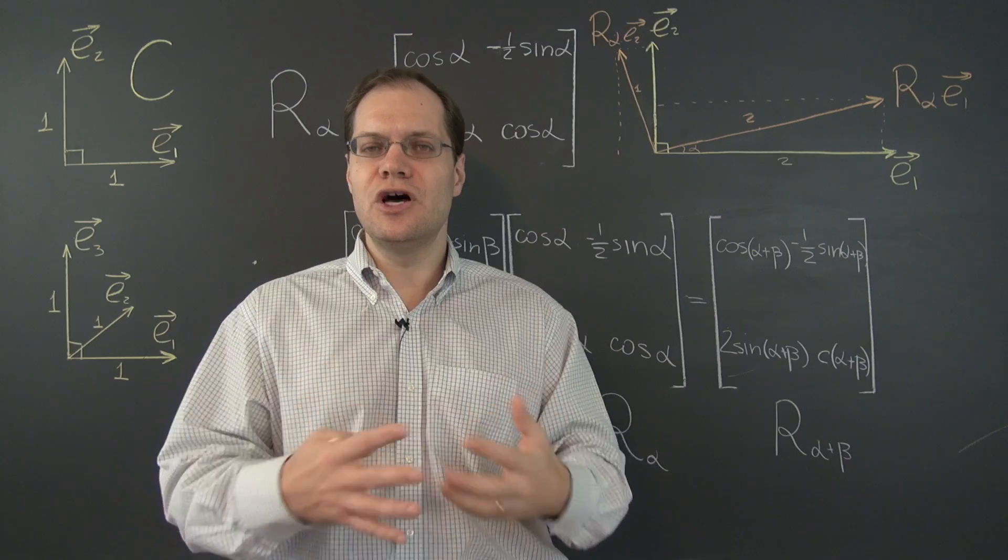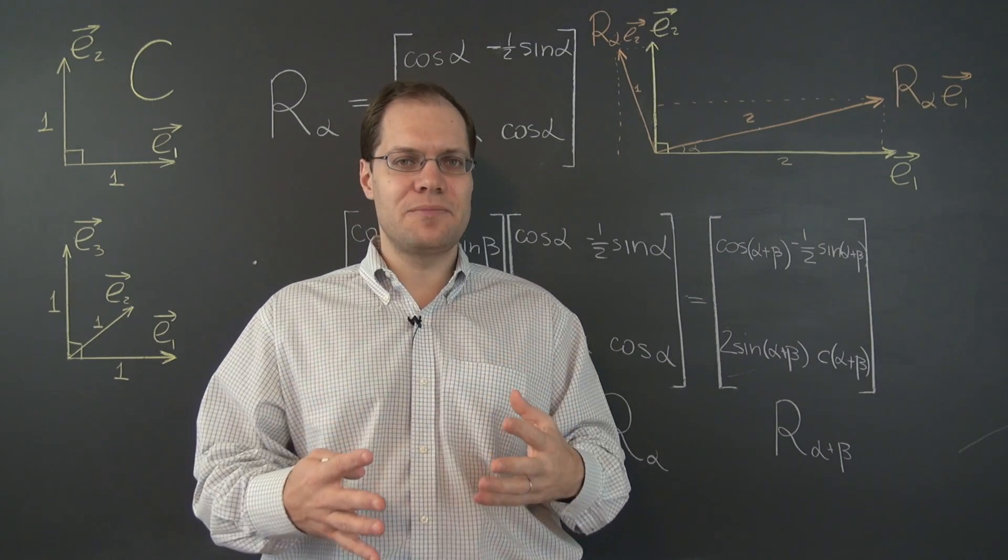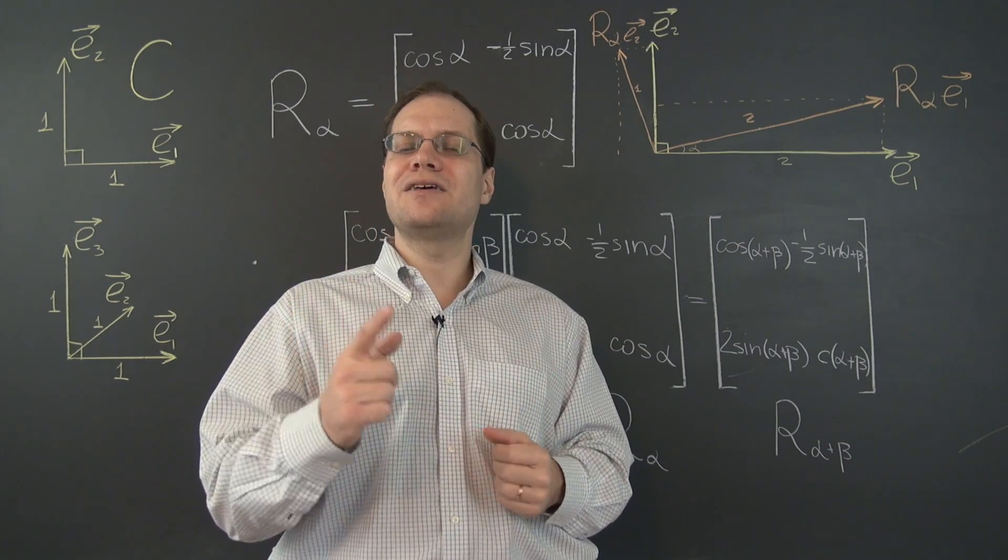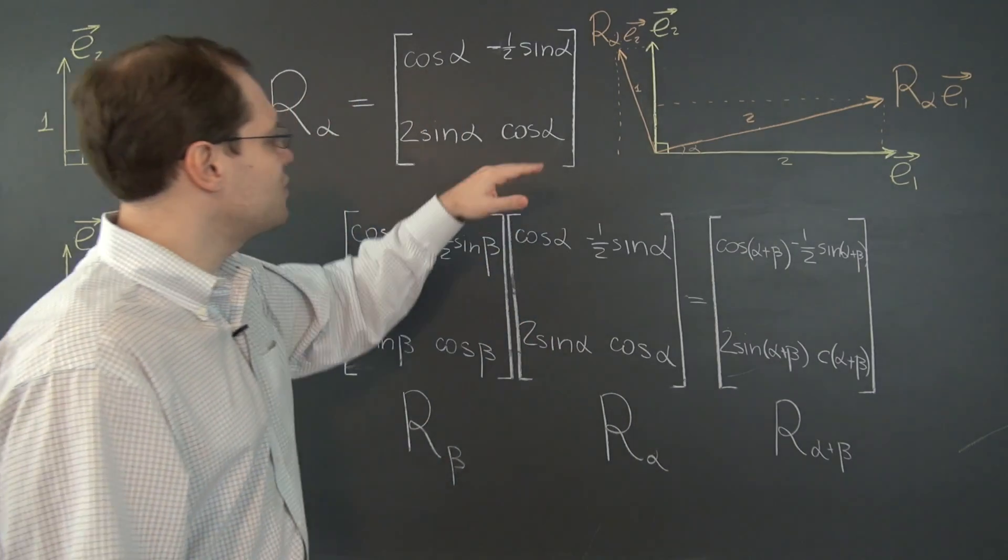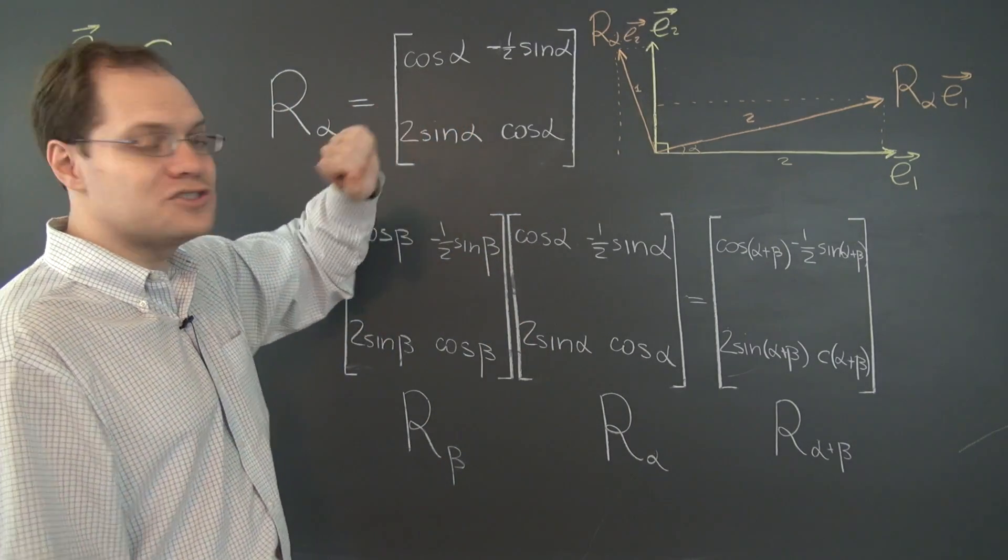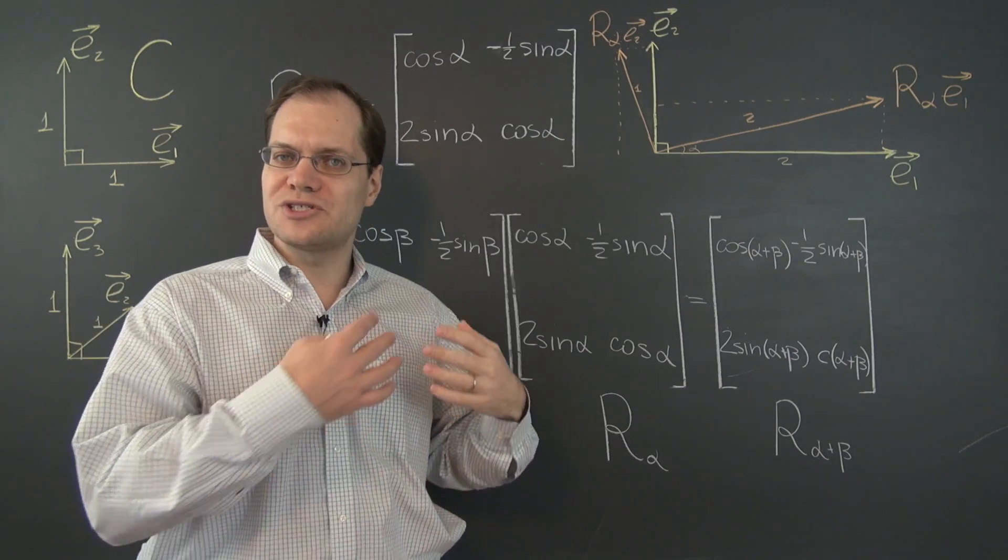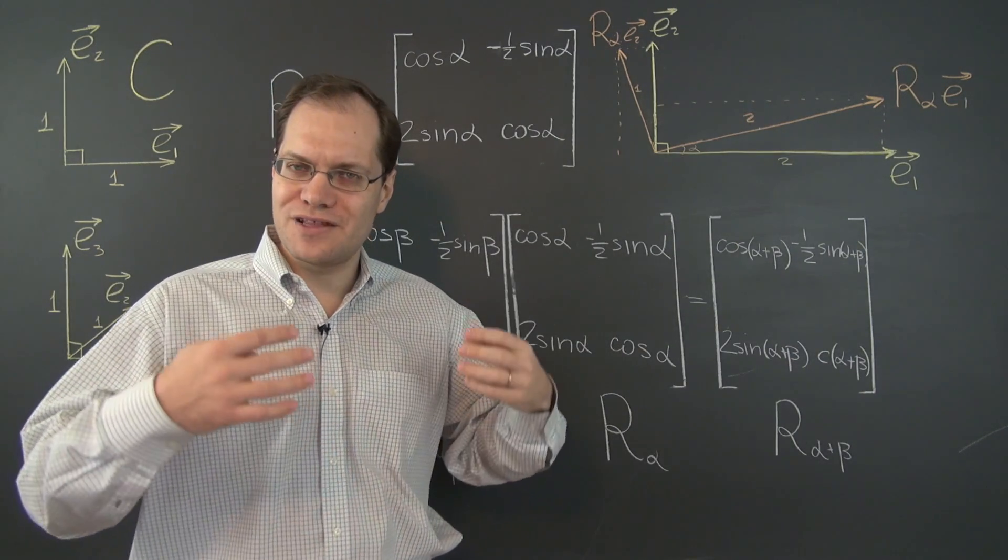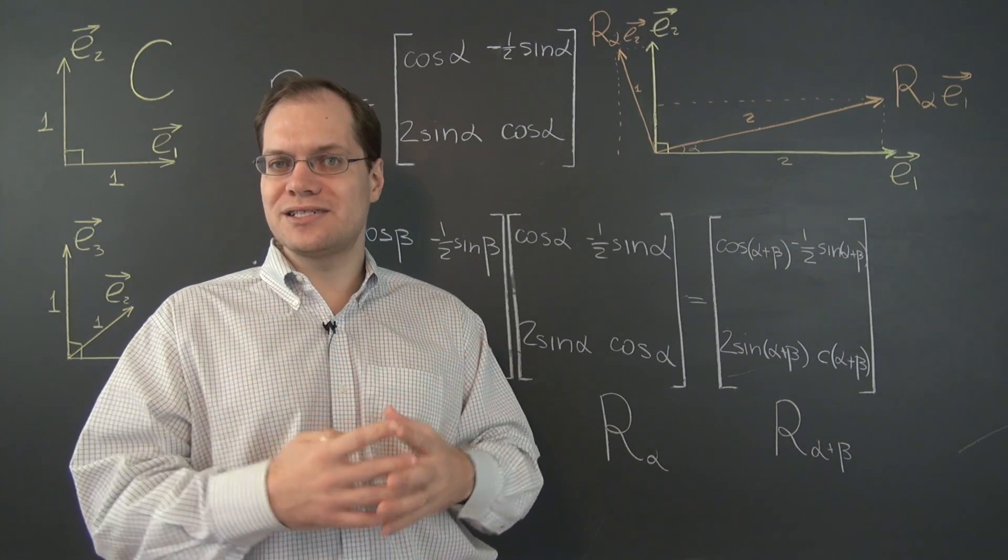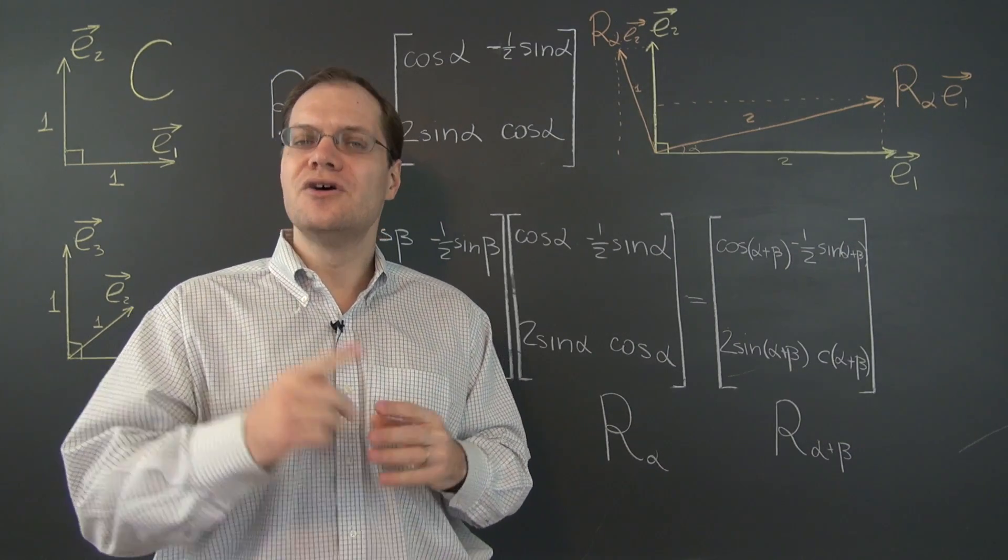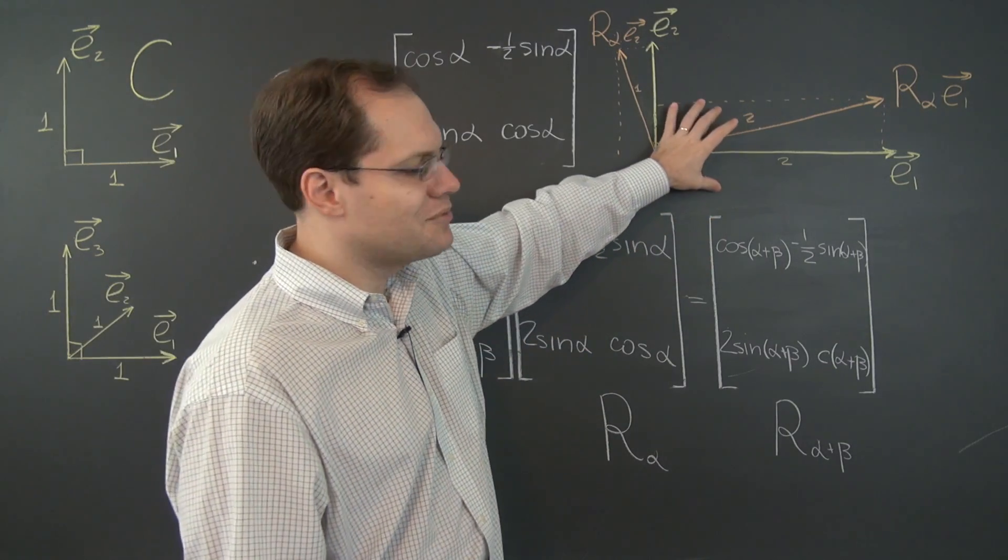Once again, this matrix will have no eigenvalues by the same argument as we used before. Let's calculate its trace and its determinant. So we'll start with the determinant, which of course, as we discussed towards the end of that video, is the property of the linear transformation and not the matrix itself. So we're expecting, once again, that the determinant is 1, which would be the case always, once again, regardless of the choice of the basis.